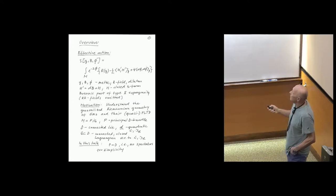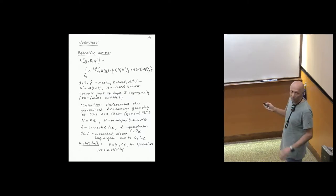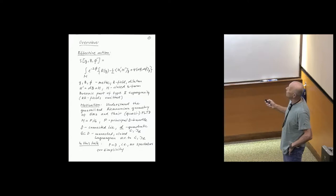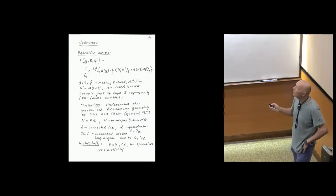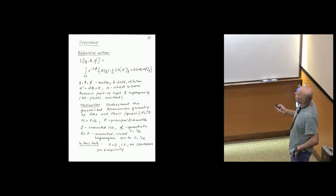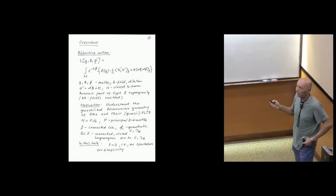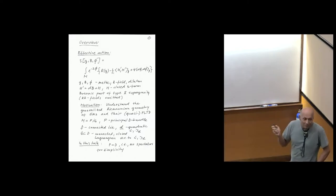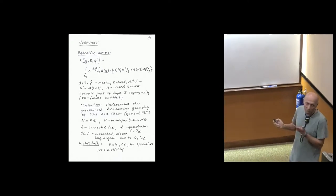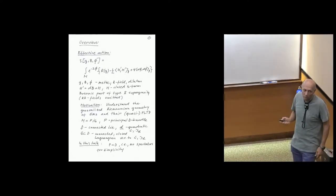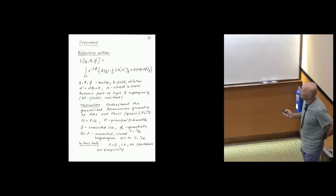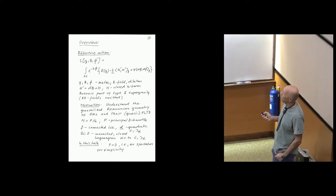We have, as I said, a metric — preferably Riemannian to keep it simple — a B field, and the dilaton. H-bar is just a combination of a closed three-form and D of B. So you recognize the bosonic part of type 2 supergravity, with no fermions and RR fields omitted. There is no restriction on dimensions. The motivation for this talk is to understand the generalized Riemannian geometry of this type of effective actions and their quasi Poisson-Li T-duality.